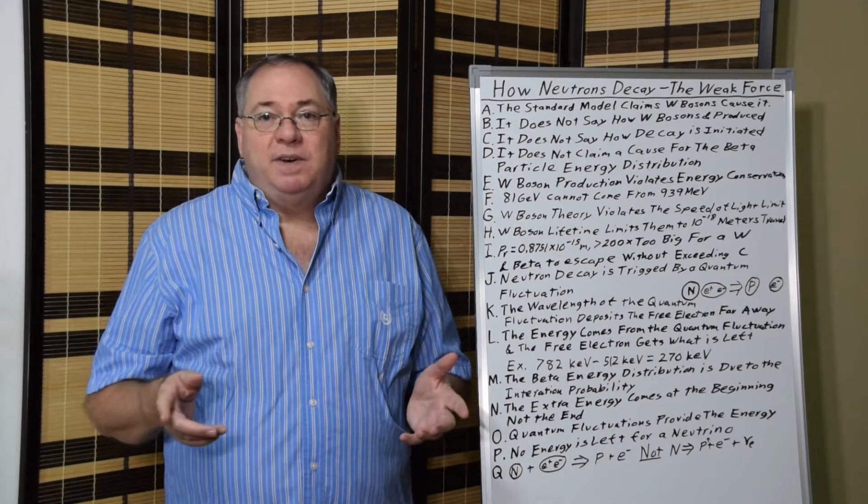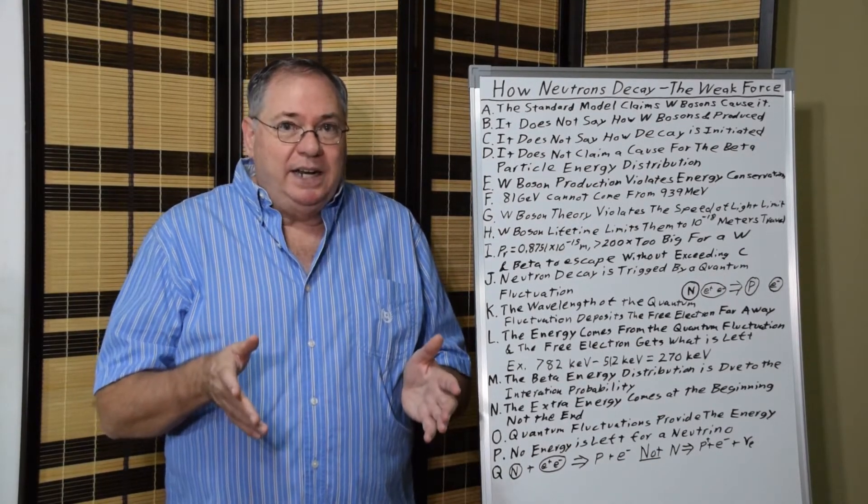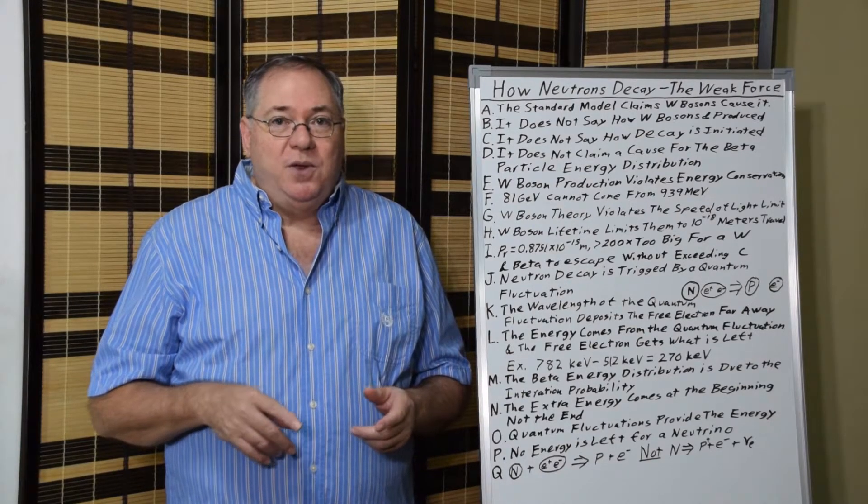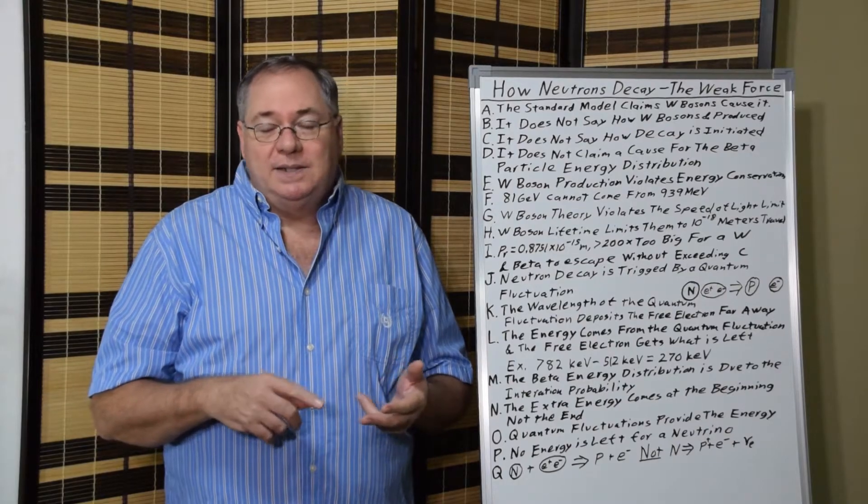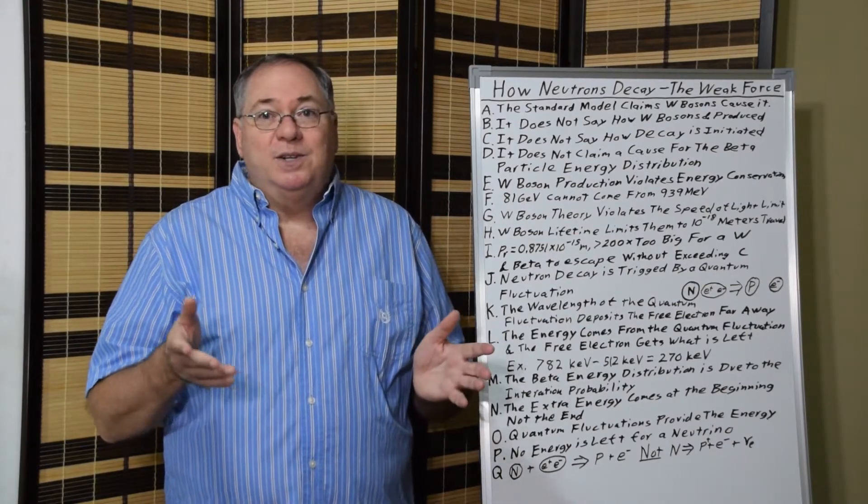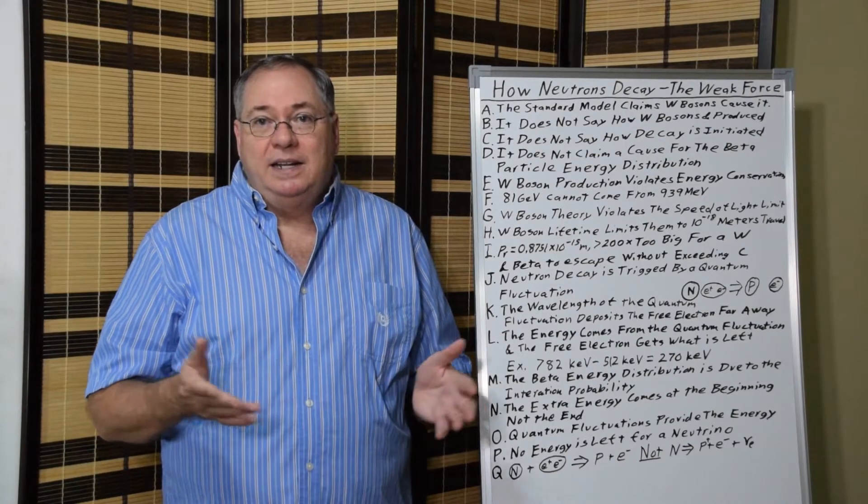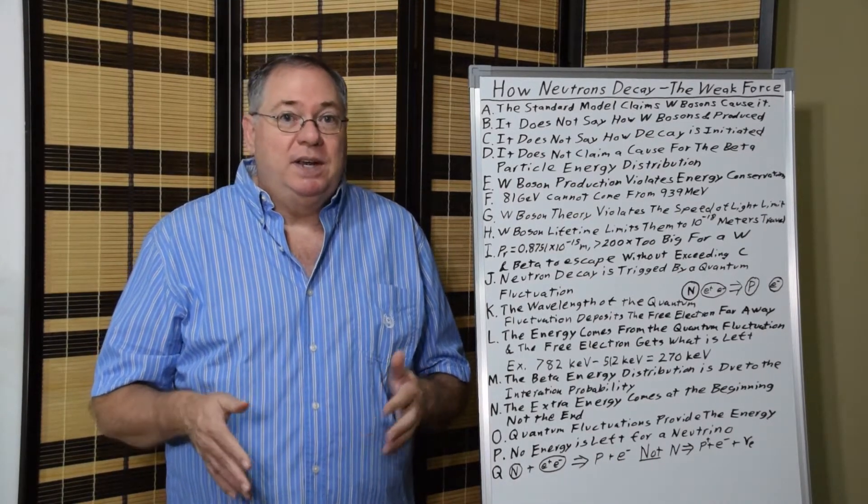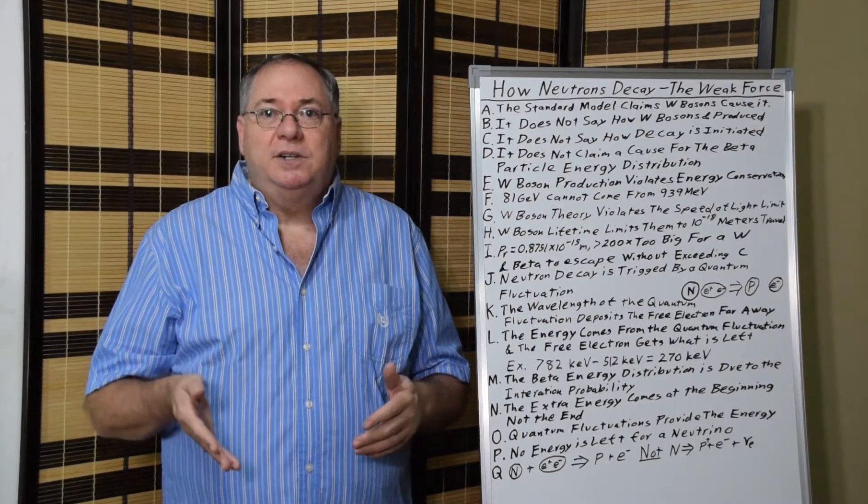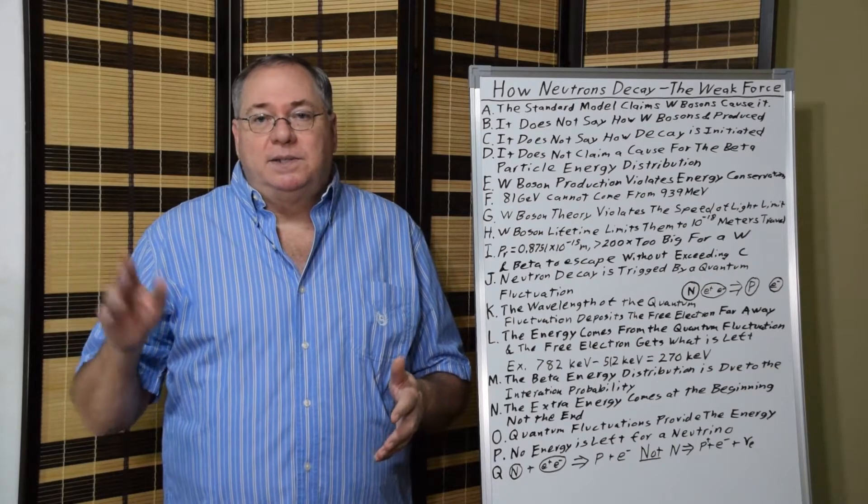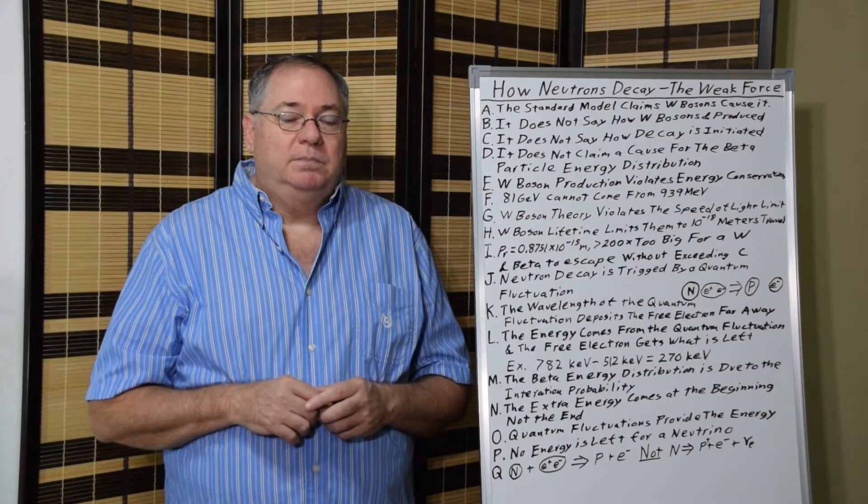And the math is fairly simple. The energy comes from the quantum fluctuations. So you have the 782 minus, say, 512 keV of energy of the quantum fluctuation. And it leaves 270. And 270 is close to the average energy of an electron that's emitted from neutron decay.